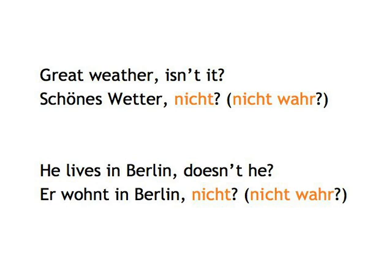An interesting use of nicht is at the end of the sentence, where it does the same job as the slightly more complicated English expressions: isn't it? doesn't he? won't you? etc. It's short for nicht wahr, expressing that you think what you say is true, but you want confirmation from the person you address. So 'Great weather, isn't it?' is simply translated as Schönes Wetter, nicht? or Schönes Wetter, nicht wahr? And 'He lives in Berlin, doesn't he?' just becomes Er wohnt in Berlin, nicht? or Er wohnt in Berlin, nicht wahr?